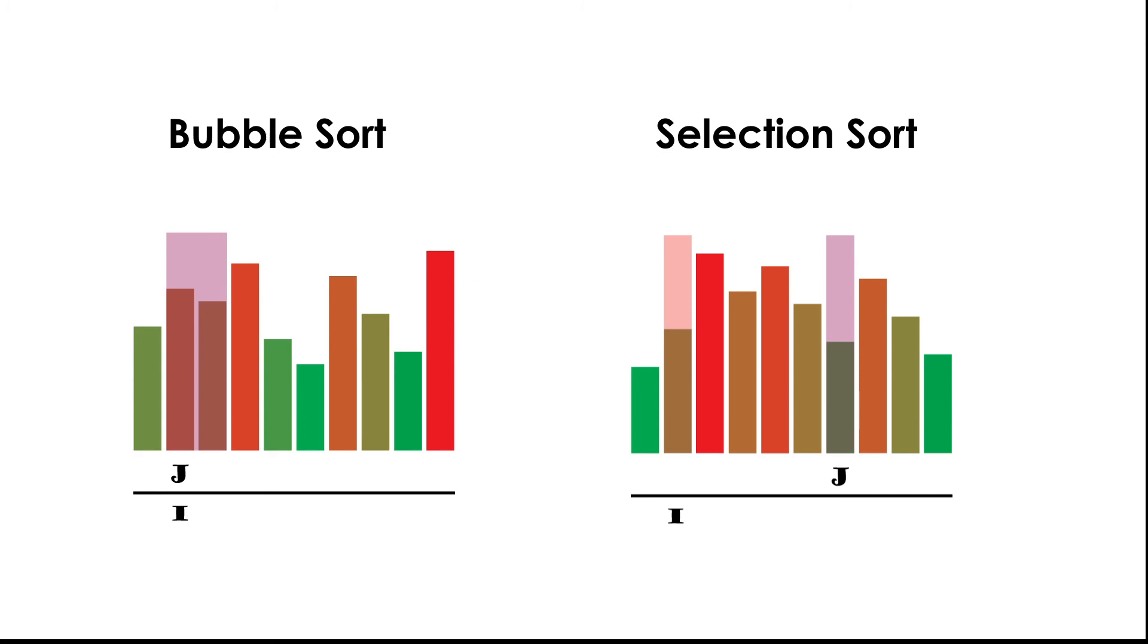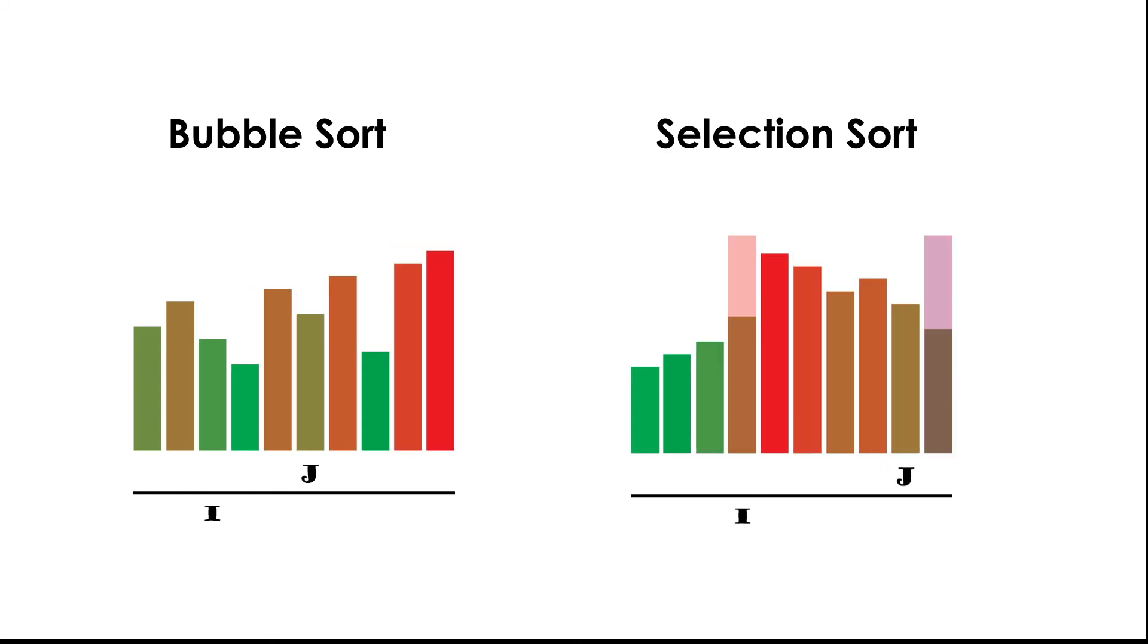And the reason why I think it's faster is because you're not going through the entire array each time. In the inner loop, you only go through the remaining unsorted items.